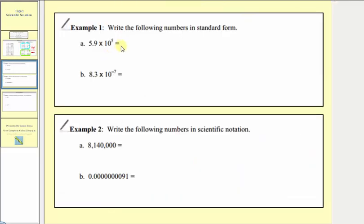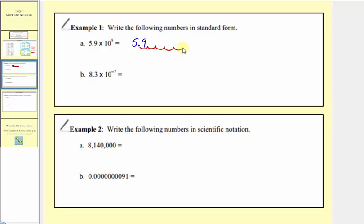We're asked to convert the following numbers in scientific notation to standard form. For part a, we have 5.9 times 10 to the fifth. Because we're multiplying by 10 to the fifth power, this result is going to be larger than 5.9. Therefore, starting with 5.9, we move the decimal point to the right five places, filling in the missing digits with zeros. So in standard form, 5.9 times 10 to the fifth is equal to 590,000.